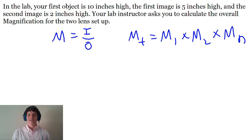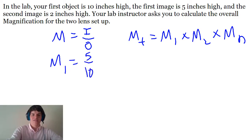So let's first calculate M1 and M2 using this equation on the left. M1 equals 5 divided by 10, which is also known as 1 half. M2 equals 2 divided by 5, which we would just keep as 2 fifths.